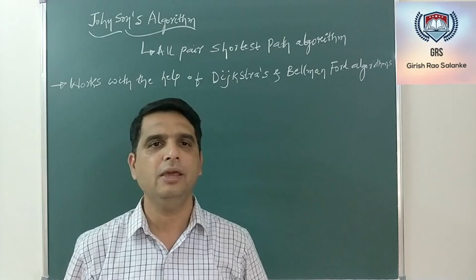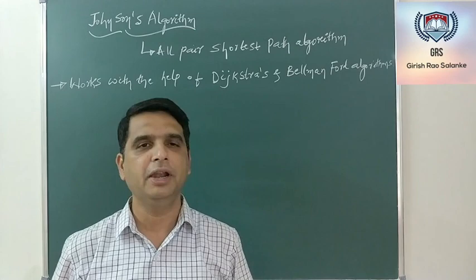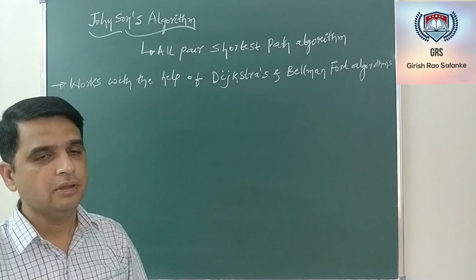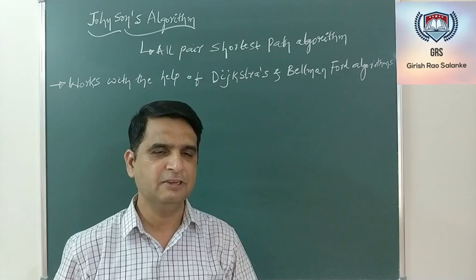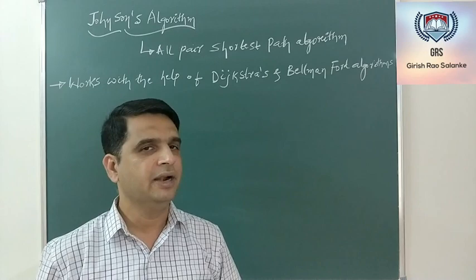This is almost similar to Floyd's algorithm that we have already discussed in case of dynamic programming. The Johnson algorithm works with the help of both Dijkstra's as well as the Bellman-Ford algorithm. In the sense, Johnson's algorithm is built with the help of both Bellman-Ford as well as Dijkstra's algorithm.